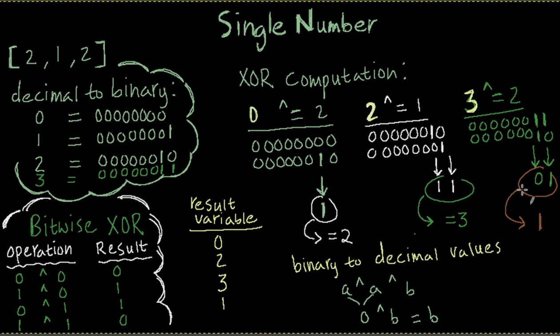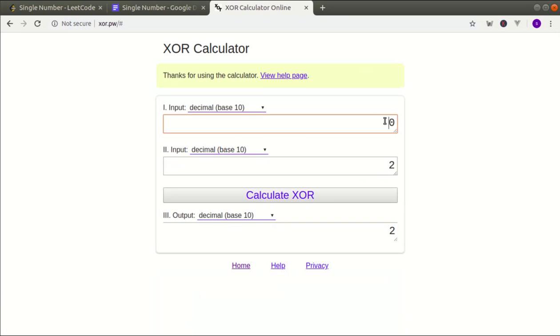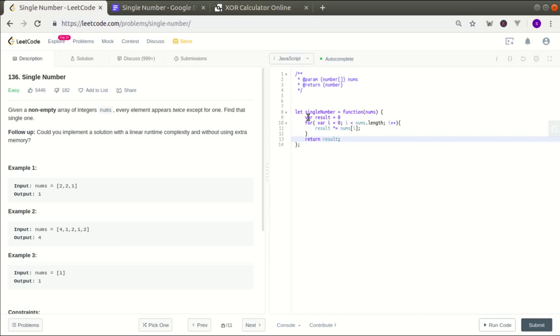So that's really the concept. Now let's transcribe it into code. Okay, before I get to the code, I just wanted to show I found this handy XOR calculator online and basically just select the decimal for the type and then we can run the example here. So 0 XOR with 2 is 2, and then 2 XOR with 1 is 3. As we had seen, 3 XOR with 2 equals to 1, which we have seen. So that's a very neat tool to use.